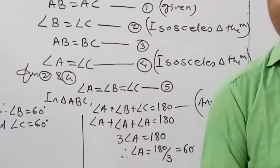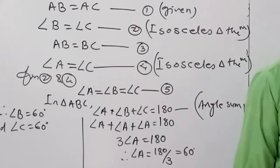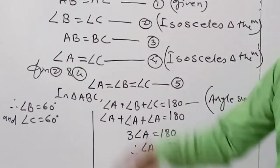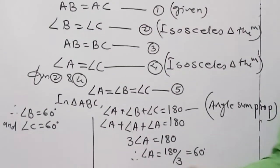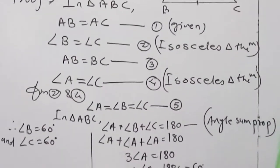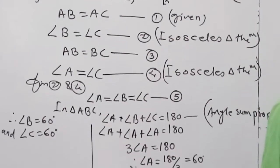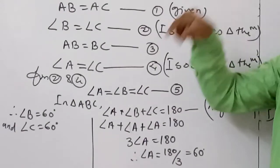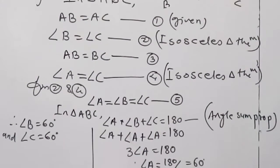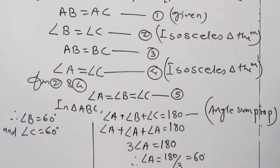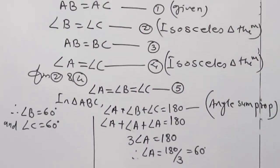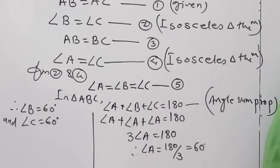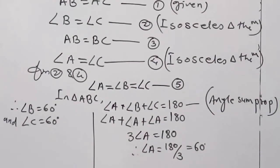So angle A equals angle B equals angle C equals 60 degrees. This means that this triangle is also called an equiangular triangle. So we can say that an equilateral triangle is also an equiangular triangle. The question can also be asked as: show that an equilateral triangle is also an equiangular triangle.